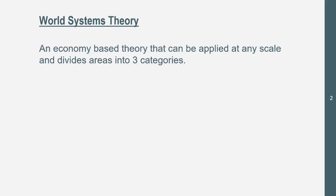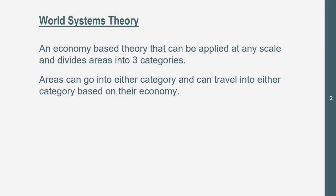Starting with World Systems Theory — it's an economy-based theory that can be applied at any scale, and it divides areas into three categories. Areas can move between each category based on their economy. One important thing to note, which may appear on a progress check, test, or AP exam, is that the World Systems Theory doesn't necessarily explain how they travel between categories. It can be applied at any scale — a country, a city, a state, a county, or a parish.